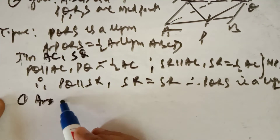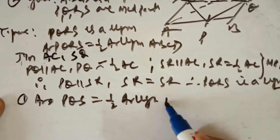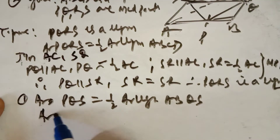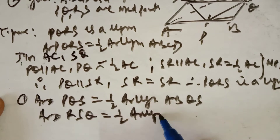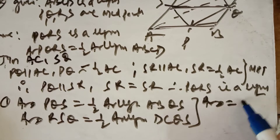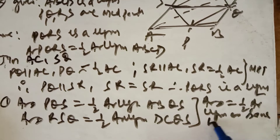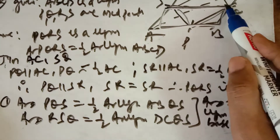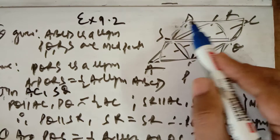The area of triangle PQS is equal to half the area of parallelogram ABQS — because they share the same base and are between the same parallel lines. Similarly, the area of triangle RSQ is equal to half the area of parallelogram DCQS. A triangle's area is half that of a parallelogram on the same base and between the same parallel lines.